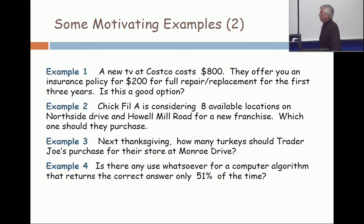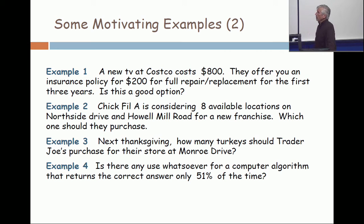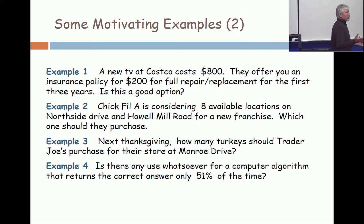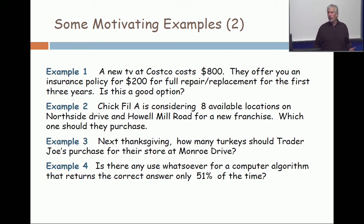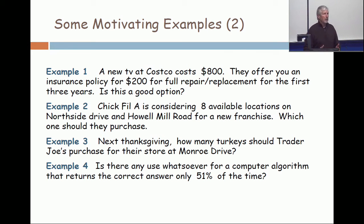Example two: Chick-fil-A is going to put up a new franchise, and they're looking at locations where they might purchase land — on Northside Drive and Howell Mill — and they find eight different locations. Which one should they choose? Why is this a probability thing? Because you make a decision, but you don't know what's going to happen around you. The location on Howell Mill might get better or it might deteriorate. The place where you put your Chick-fil-A might look good at one moment and much worse later, or the other way around.